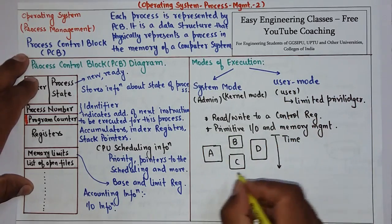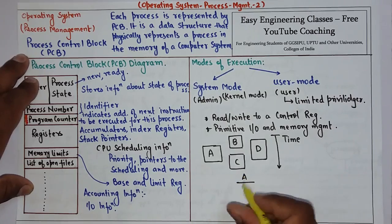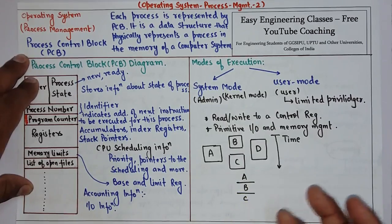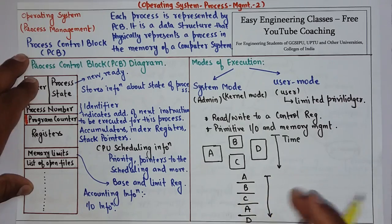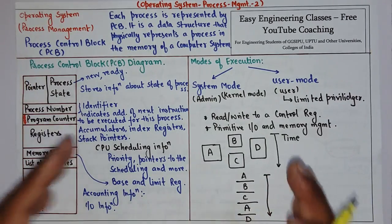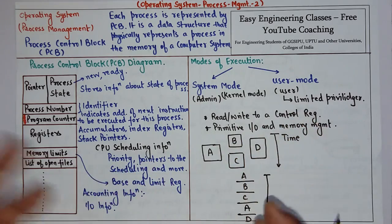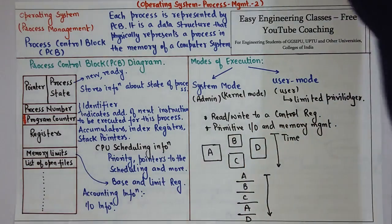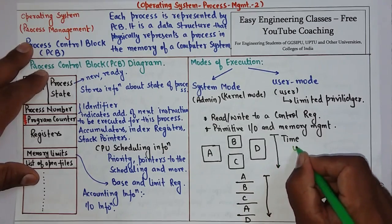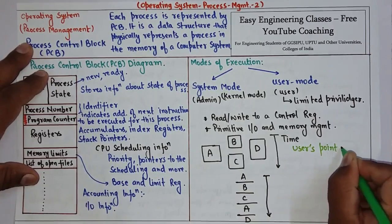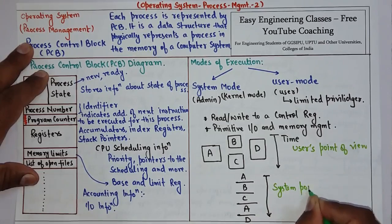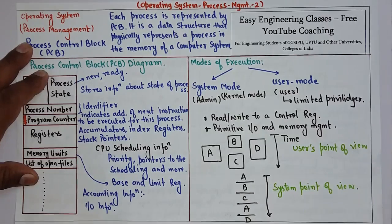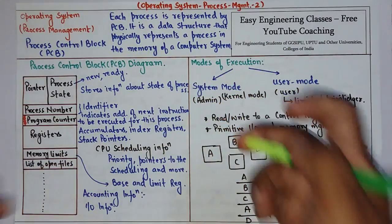But from the system's point of view, first process A runs, then process B may run, then C may run, and if some execution of process A is left, process A may run again, then process D runs. So from the system's point of view, processes run serially one by one, but from the user's point of view, the user thinks the processes are running concurrently. This is the distinction between the user point of view and the system point of view of process execution.